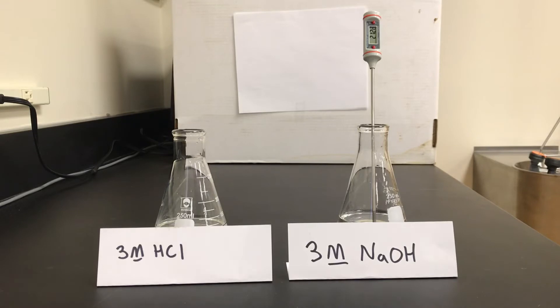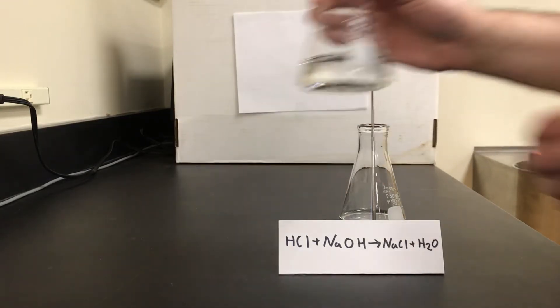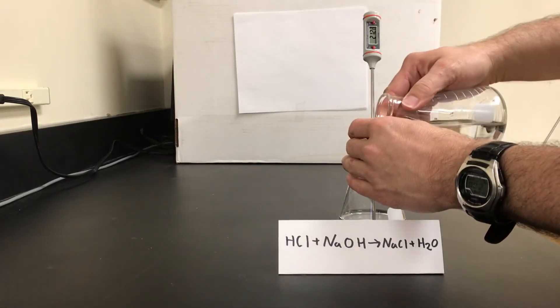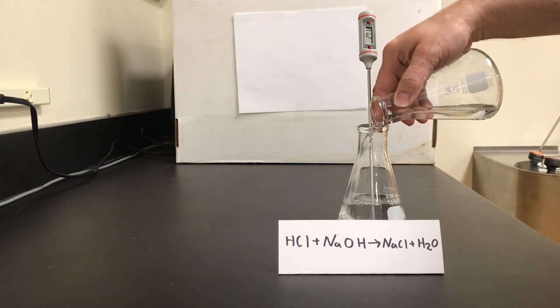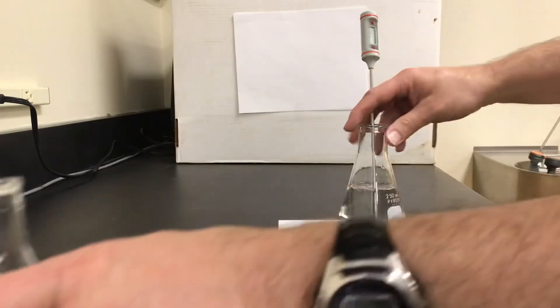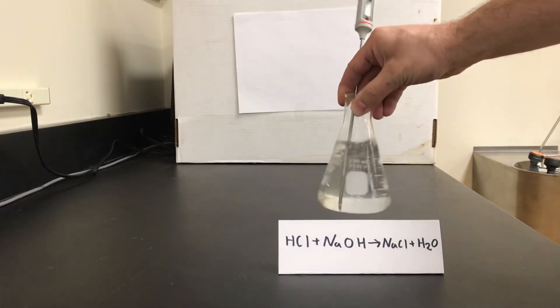The chemical reaction is the reaction between hydrochloric acid and sodium hydroxide to make sodium chloride, table salt, and water. So let's see what happens. I'll pour the solutions together, agitate to mix the solutions up,